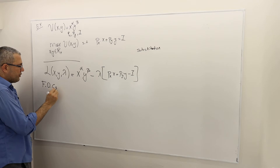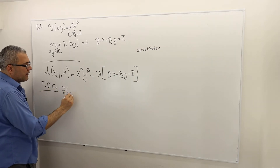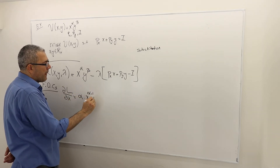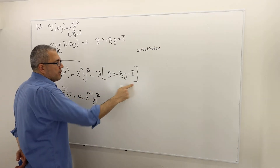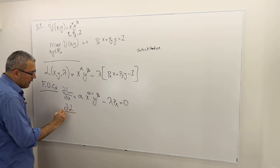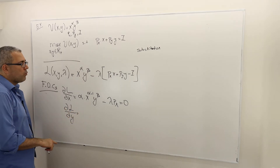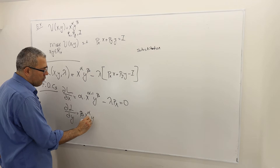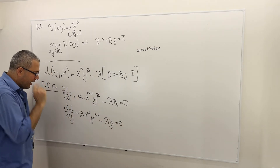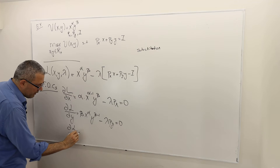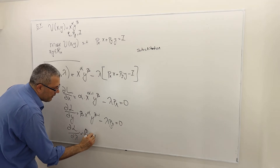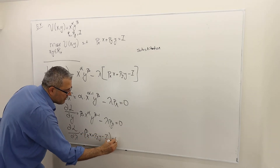The first order conditions are: dL/dx = alpha * x^(alpha-1) * y^beta - lambda*px = 0; dL/dy = beta * x^alpha * y^(beta-1) - lambda*py = 0; and dL/dlambda = -(px*x + py*y - income) = 0.